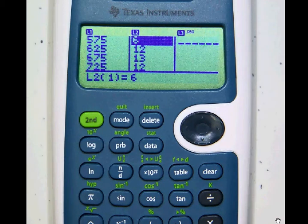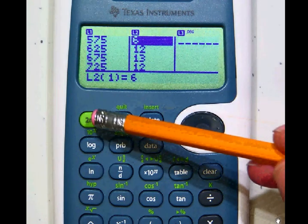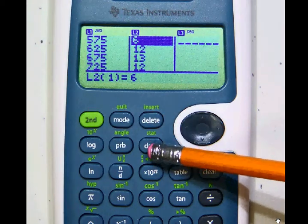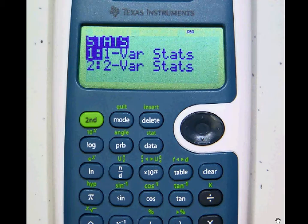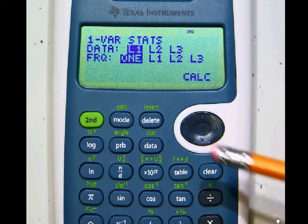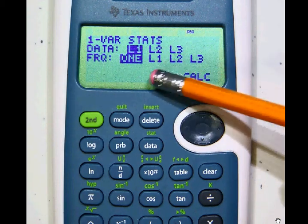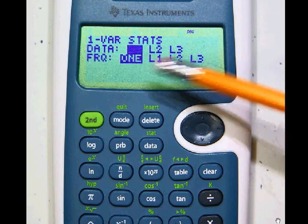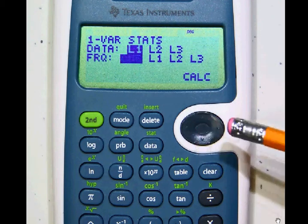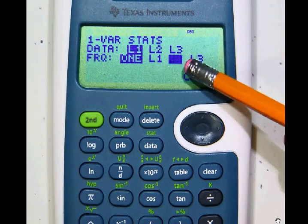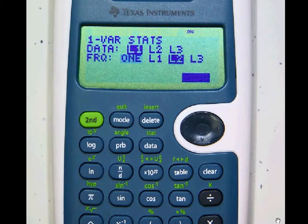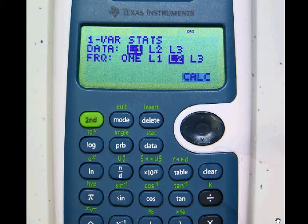As soon as you have that done, then do this. Hit the second function and then hit that data button or stat function again. Go with one variable stat, so just hit enter. And now at this stage, you must make a change on the second line where it says frequencies. Go down here and move over and put those frequencies in list 2. So get that L2 blinking and then hit enter. That'll lock that in. Then we're ready to calculate.